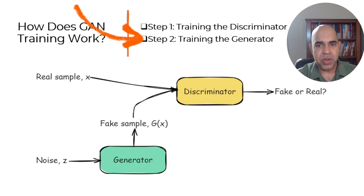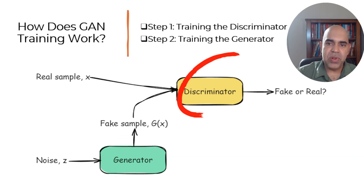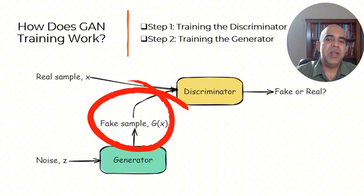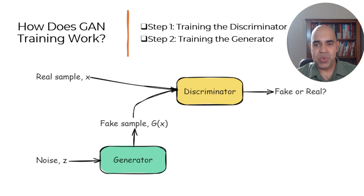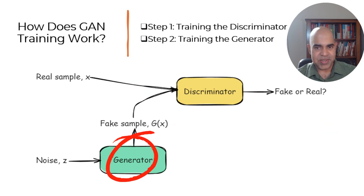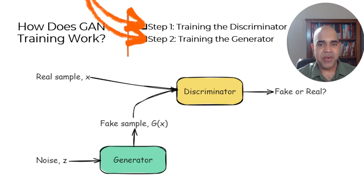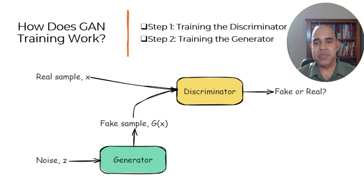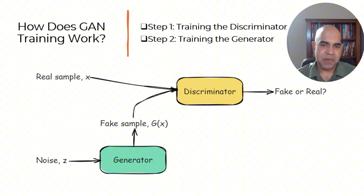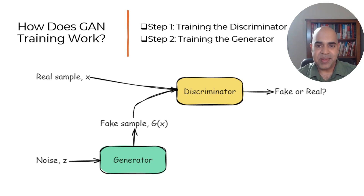In step two, during the training of the Generator, the Generator tries to fool the Discriminator by producing more realistic data. The Generator's loss is minimized when the Discriminator incorrectly classifies generated data as real. The Generator learns by using the Discriminator's feedback to produce better quality data. These two steps are repeated iteratively, leading to both networks gradually improving, until ideally they reach an equilibrium where the Generator's fake data becomes so good that the Discriminator cannot reliably distinguish it from real data.